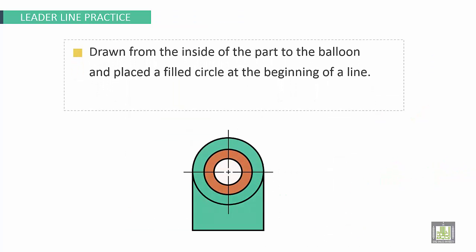Leader line practices. Drawn from the inside of the part to the balloon and place a filled circle at the beginning of the line. Here the balloon to indicate the number of this part. Starting from the part, drawn in oblique direction. This is for part two.